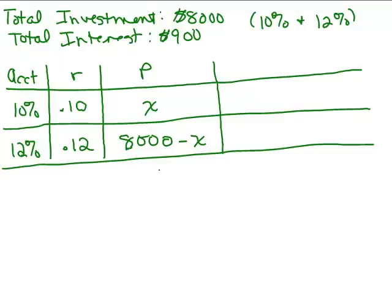Now, it might have been easier to put X for the .12 and 8,000 minus X for the .10. In fact, it probably would be. But that's up to you. You get to define where you want to put the X and where you want to put the 8,000 minus X.